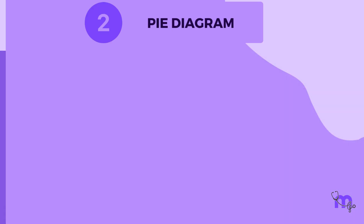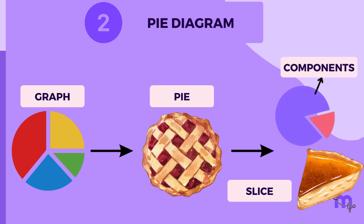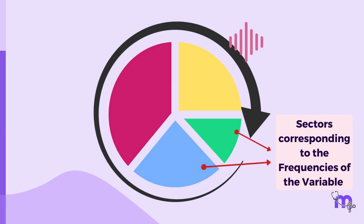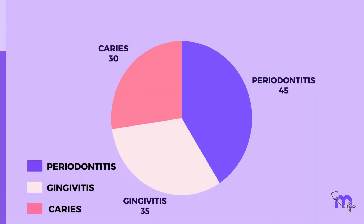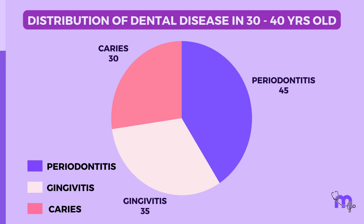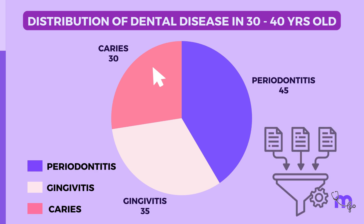The second type of diagram is the pie diagram. These are so called because the entire graph looks like a pie and its components represent slices cut from a pie. The total angle at the center of the circle is 360 degrees, representing the total frequency. The circle is divided into different sectors corresponding to the frequencies of the variable in the distribution, such as the distribution of dental diseases in 30 to 40-year-olds. The segments are shaded with different shades and an index is provided. However, this type of chart cannot be used to represent two or more sets of data.